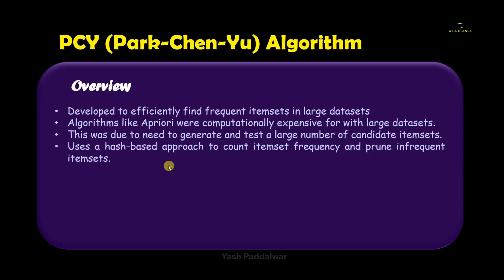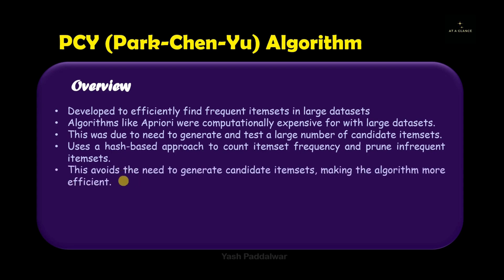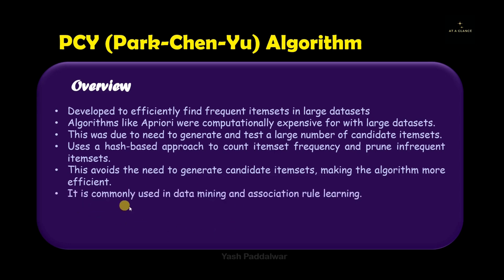Now let's see what makes this PCY algorithm special. Basically, PCY algorithm uses a hash-based approach, which is widely used in big data algorithms. This approach is used to count the item sets that frequently occur, and it also uses a technique of pruning — that means all the infrequent items whose count does not satisfy the minimum threshold will be pruned accordingly. In the end, this entire scenario avoids the need to generate candidate item sets, which makes the algorithm more efficient.